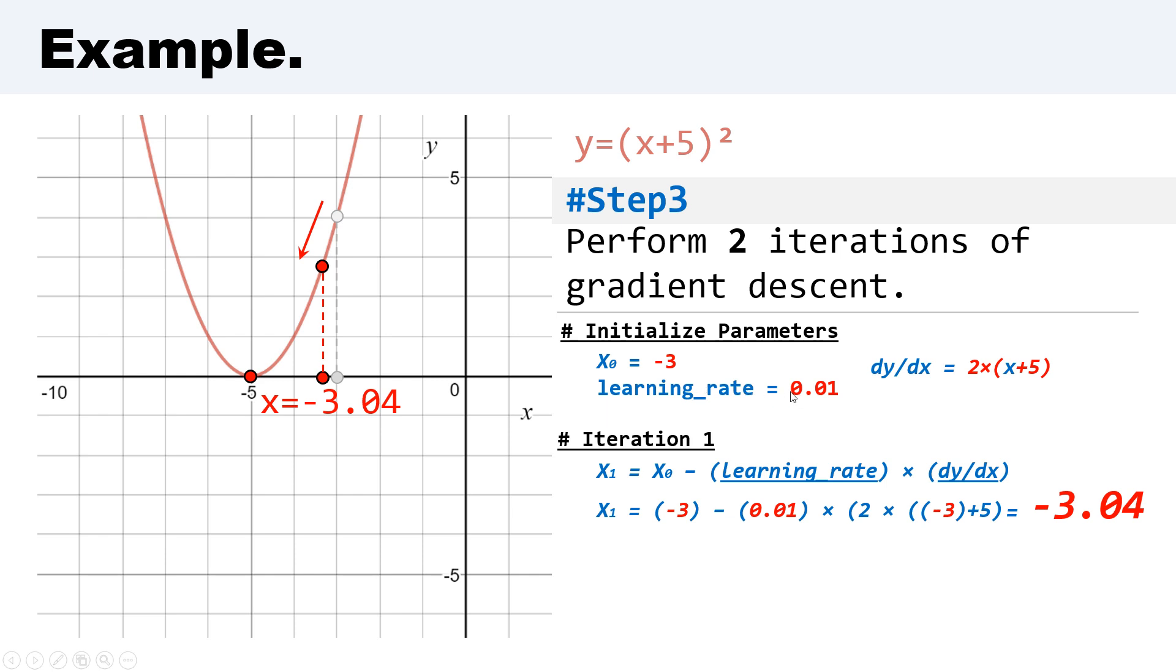When we choose learning rate 0.01, we move in the opposite direction by this step, and we have the next value in x-axis equal to -3.04.